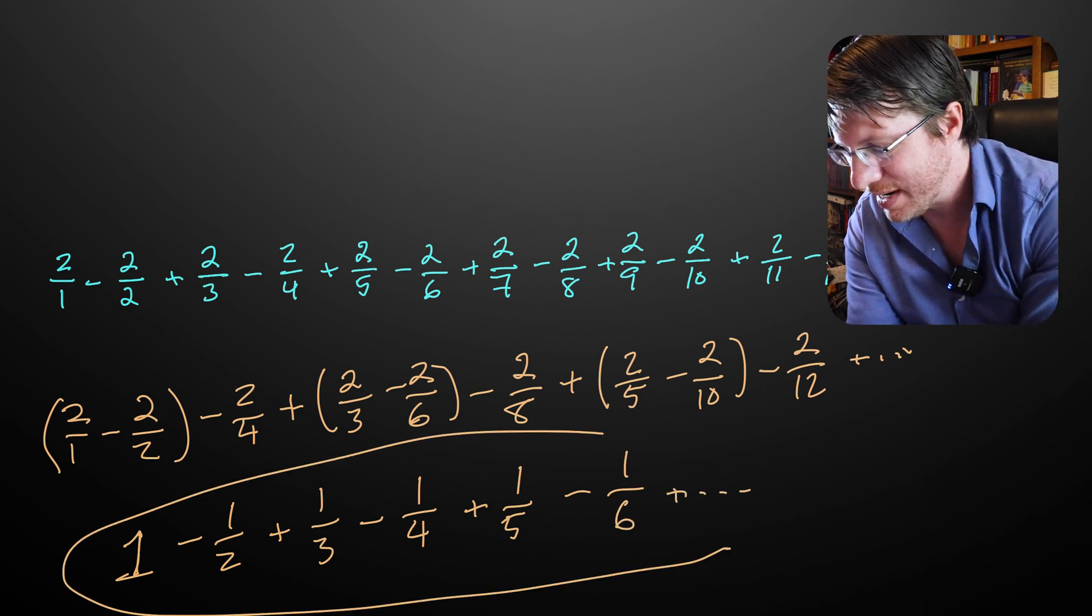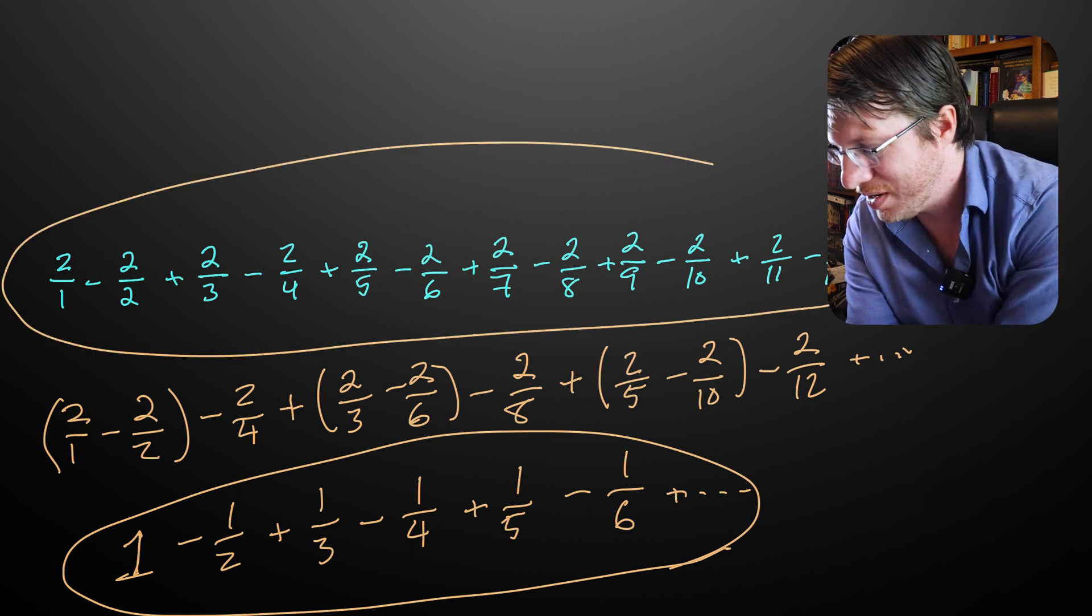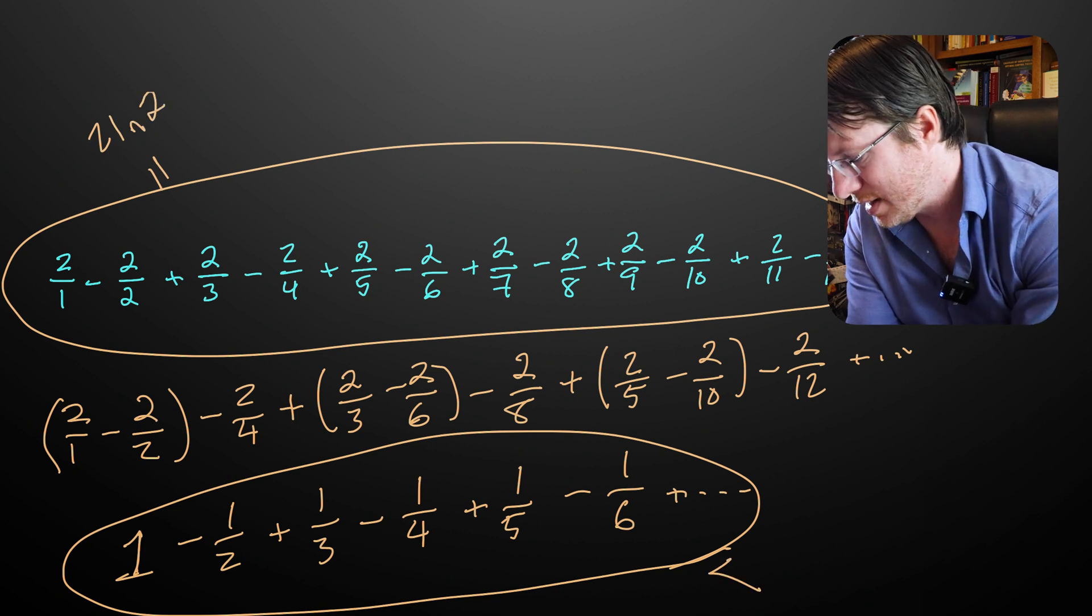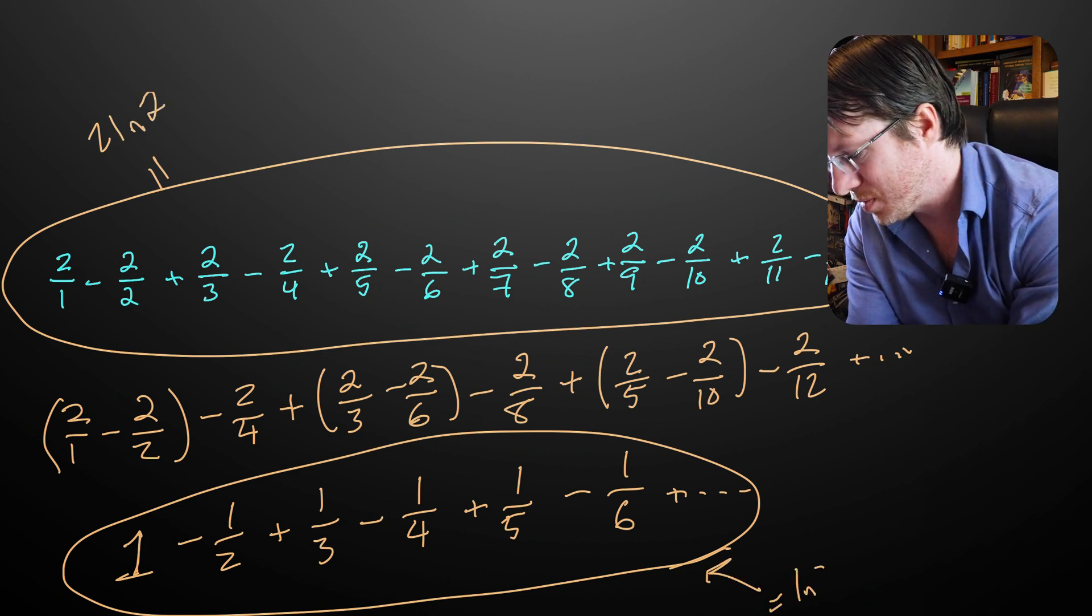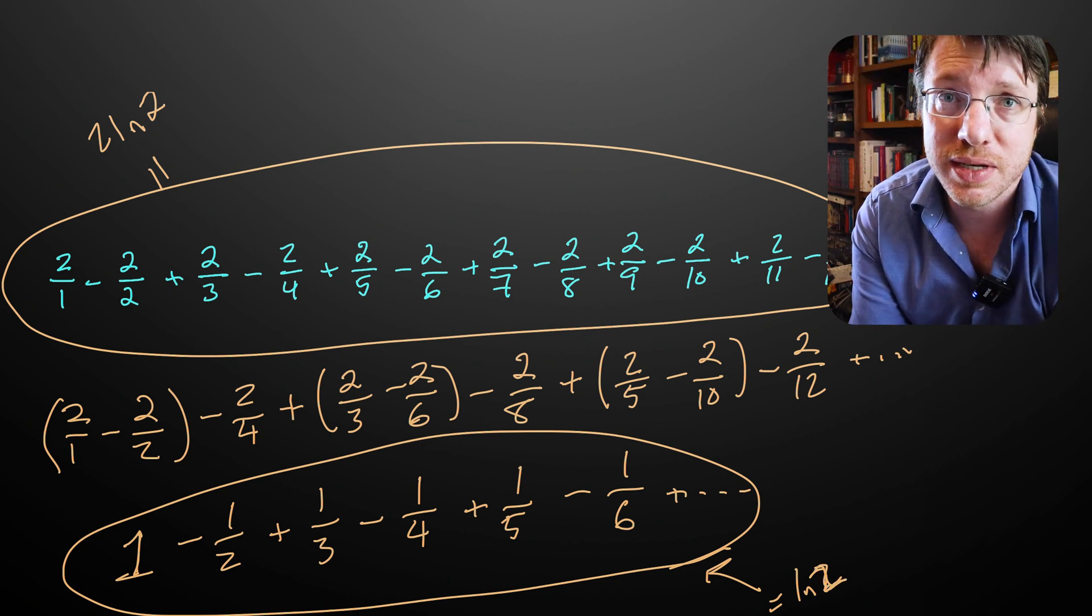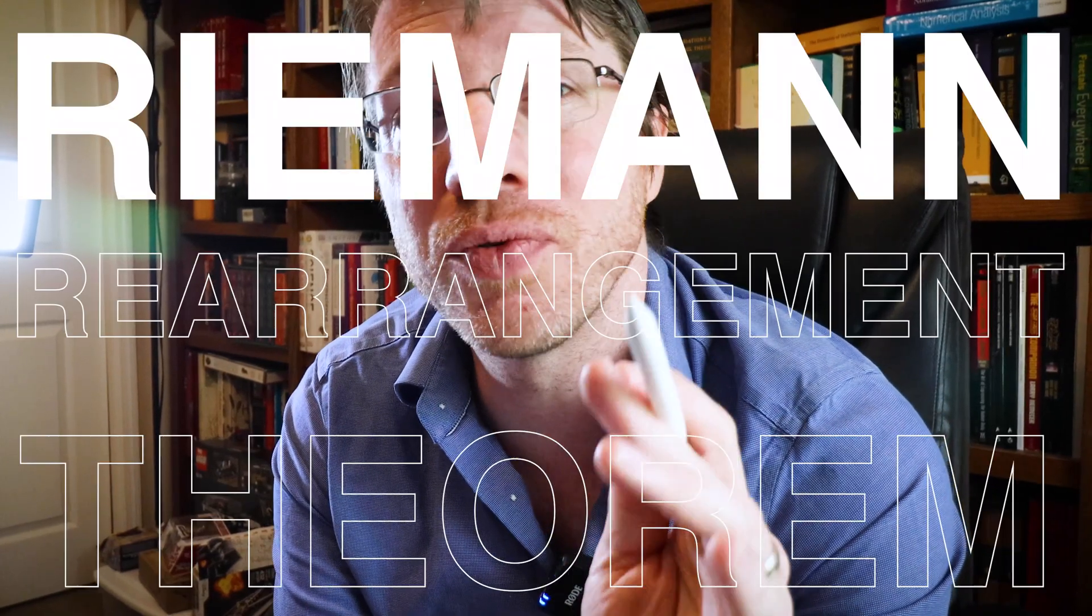So let's look at what these guys combine to. We have the 2 over 1 minus 2 over 2. That's 2 minus 1, so that gives us 1. Then we get 2 quarters simplifies to 1 half. And you see that this guy is exactly 1 half of this guy. Just by moving around some elements of my series, we got completely different answers. And that is completely bonkers.